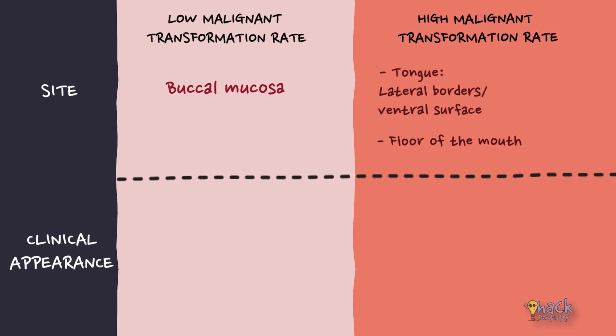As far as clinical appearance is concerned, non-homogeneous lesions, especially those white lesions that have red components, have a higher malignant transformation rate than homogenous lesions.